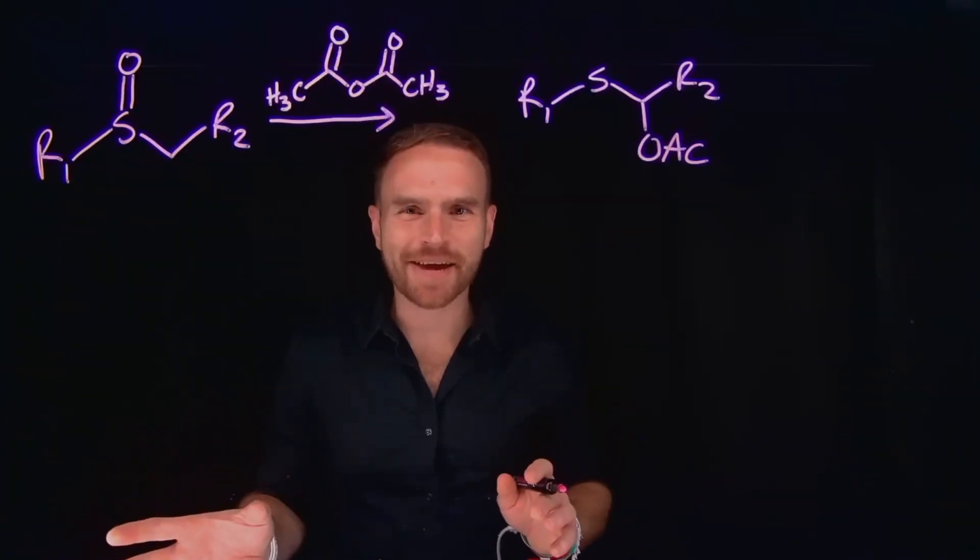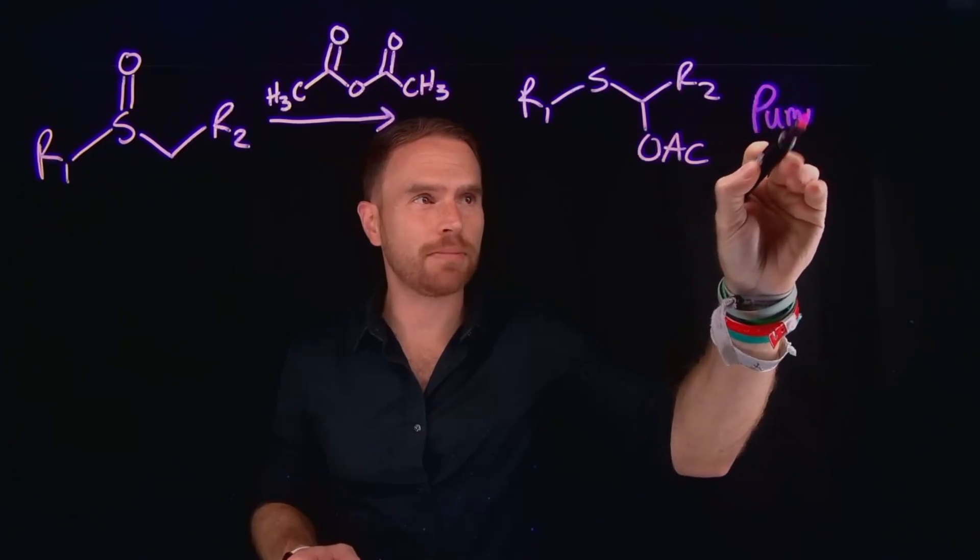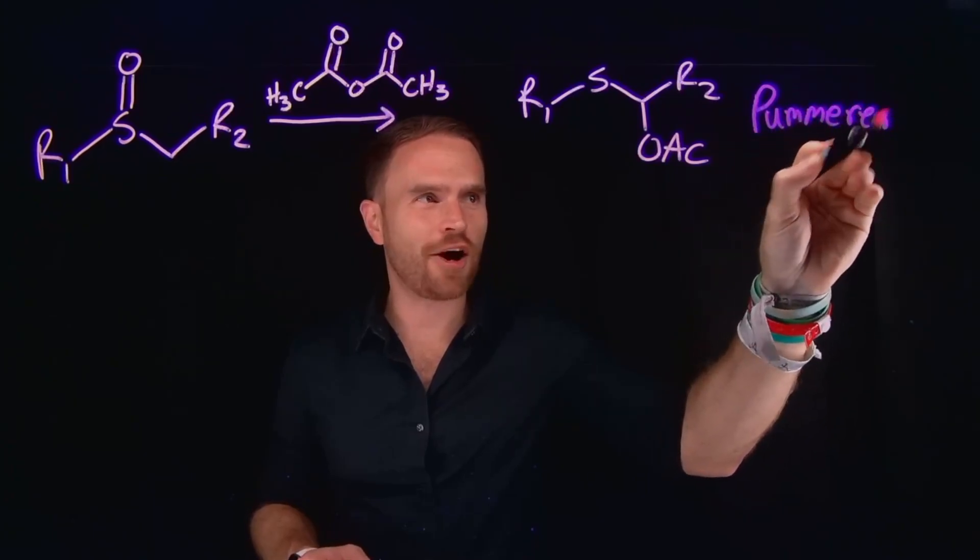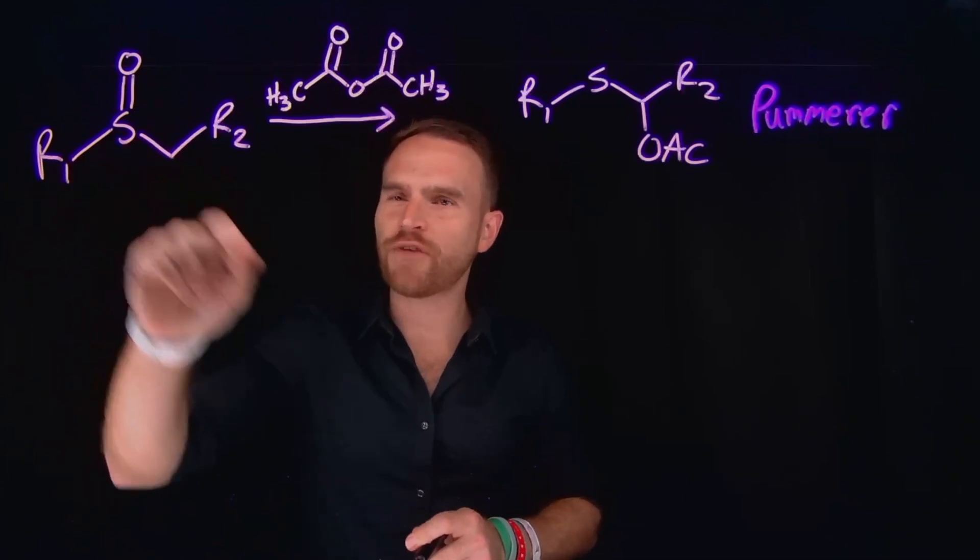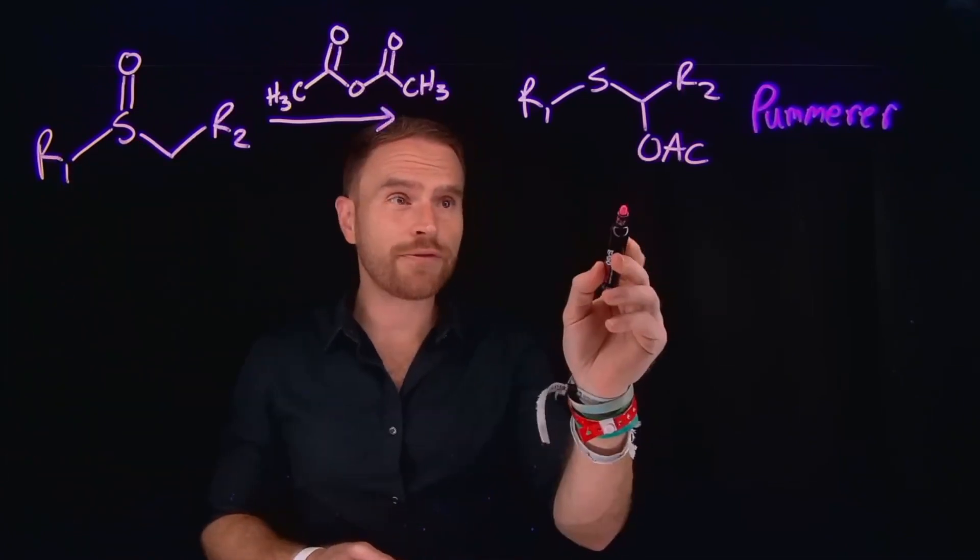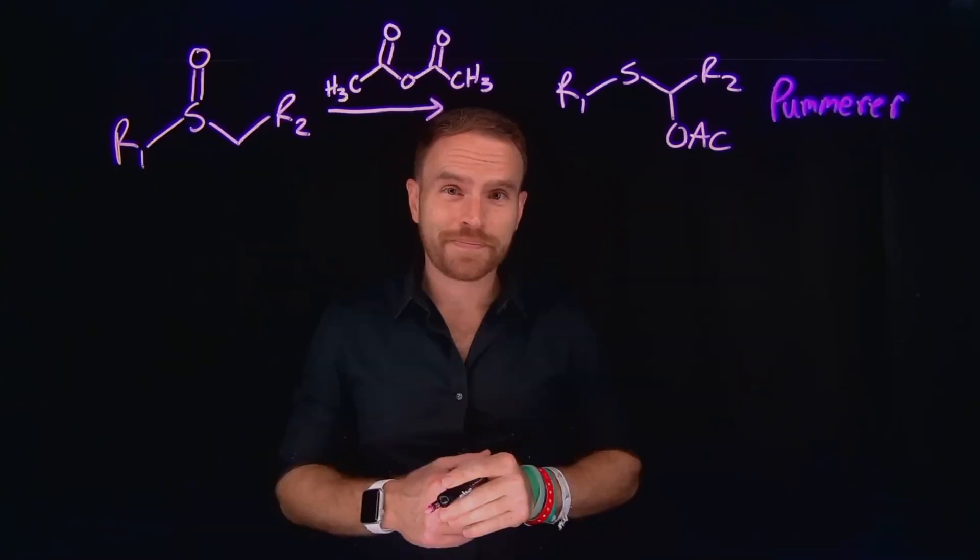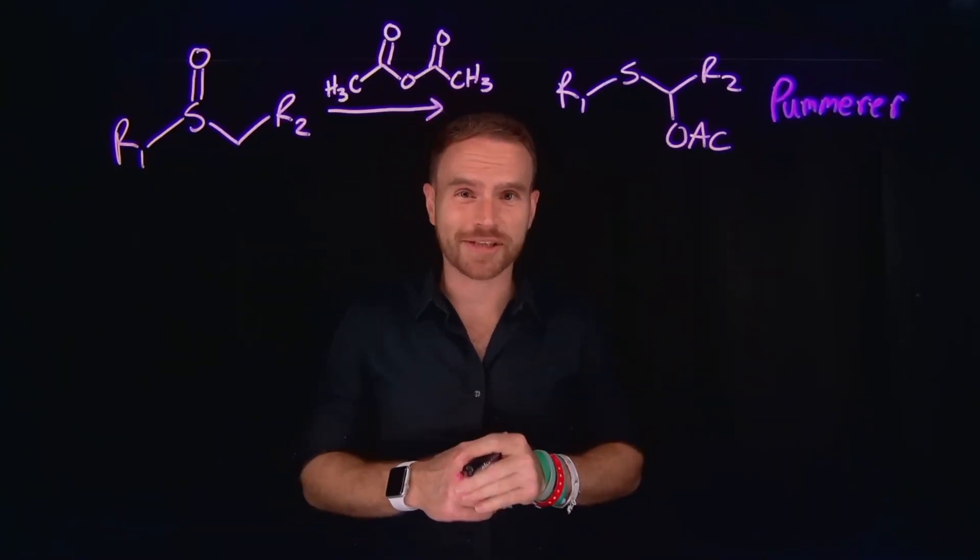This reaction is a classic example of what's known as a Pummerer rearrangement. And a Pummerer rearrangement always begins with an alkyl sulfoxide group, and the overall rearrangement generates what's known as an alpha-acyloxythioether. Again, that's an alpha-acyloxythioether, and I bet you can't say that three times fast.